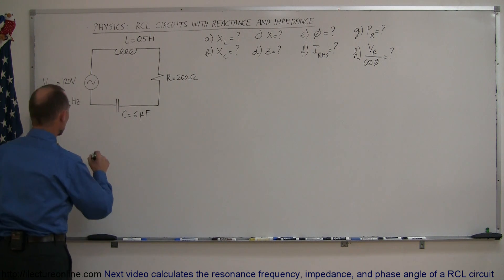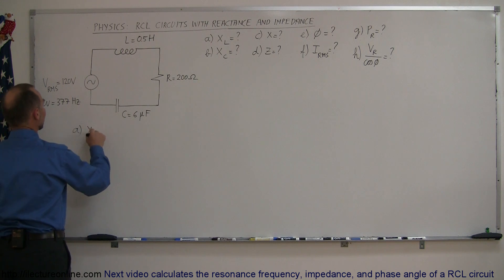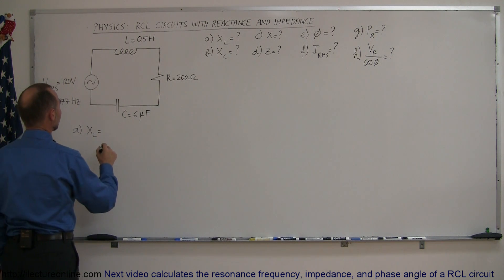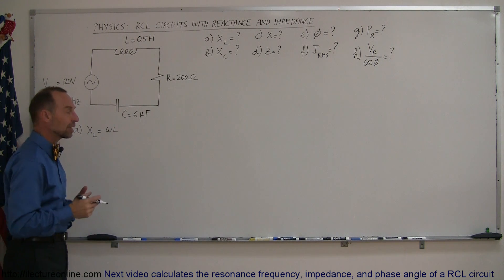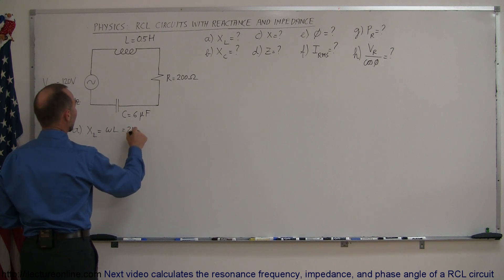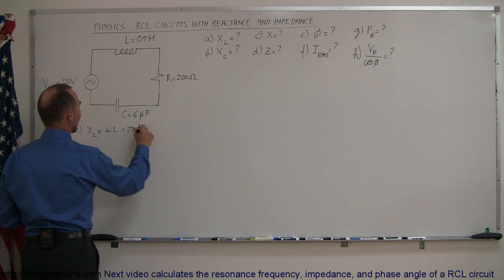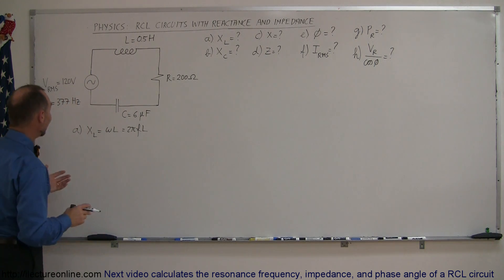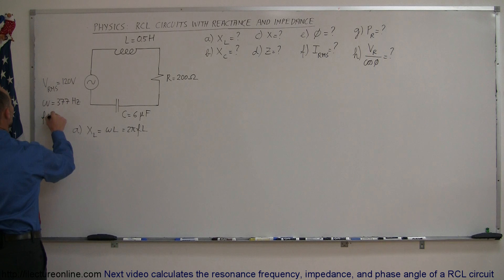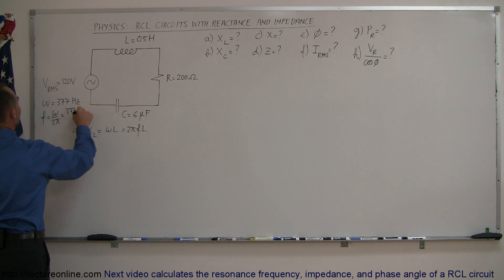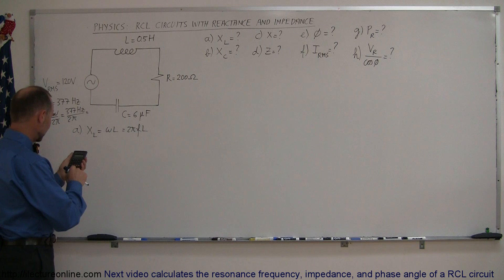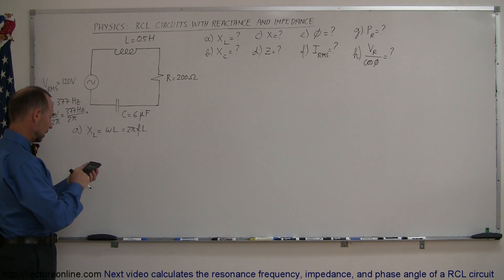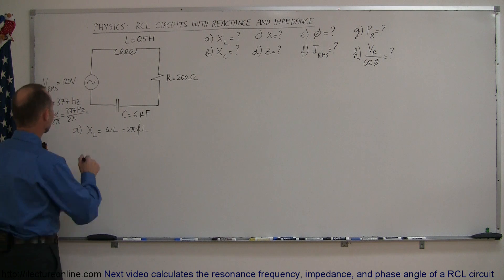Let's start with Part A — finding the inductive reactance. By definition, the inductive reactance equals omega times L, and omega equals 2 pi times the frequency, so you can also write this as 2 pi F times the inductance L. To find F, that means F equals omega divided by 2 pi. Omega is 377 hertz divided by 2 times pi, and you get 60 hertz.